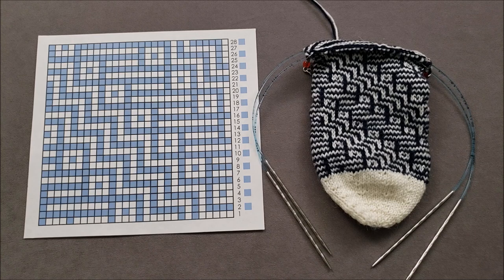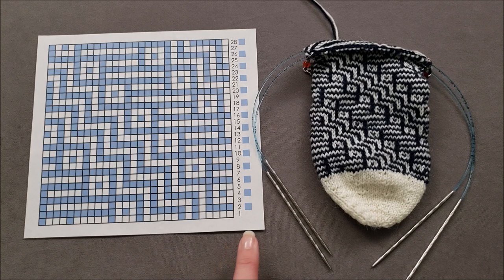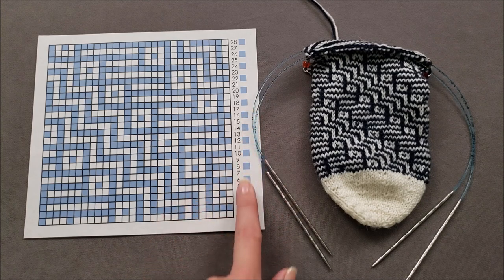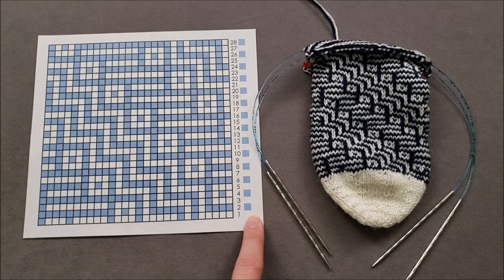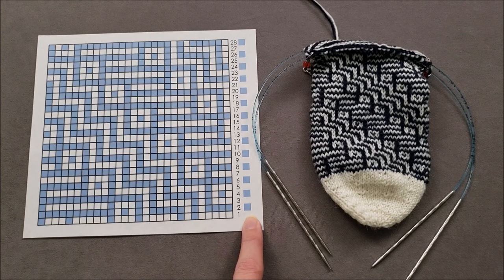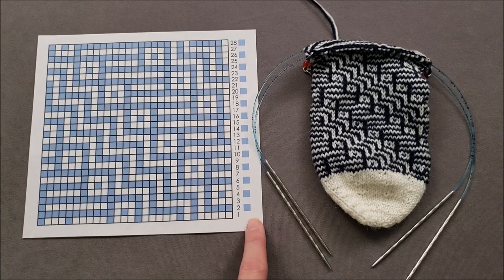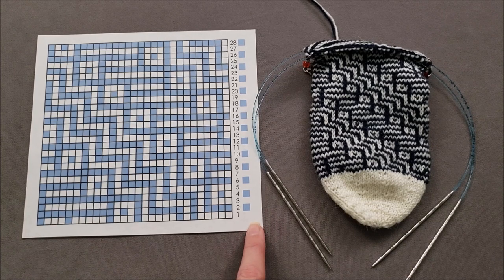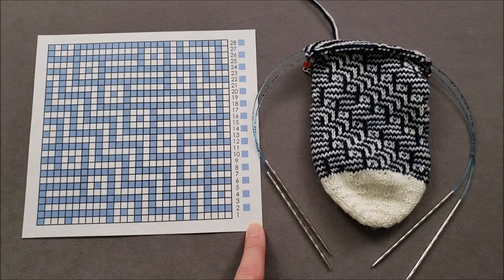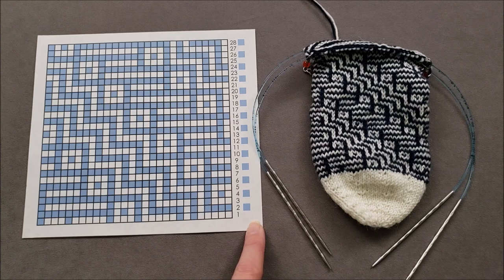But that's not the case. The clue that tells you it's a mosaic chart is the color block before the round or row number. That block means you should work the entire round or row in the color shown. And when you reach a square that's not in that row or round color, you know to slip the stitch purlwise and continue on.